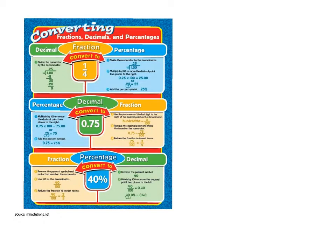If you're starting with a fraction and need to convert it to a decimal, take the numerator and place it underneath the division symbol, and the denominator outside the division symbol, then work through long division. To go from a fraction to a percent, first convert to a decimal, then multiply by 100 or move the decimal two places to the right, and add the percent symbol. For example, 1/4 is the same as 0.25 and 25%.